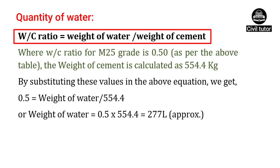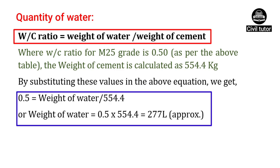The water-cement ratio is given by the formula: weight of water upon weight of cement. The water-cement ratio for M25 grade of concrete is 0.5 as per the table. The weight of cement is already calculated as 554.4 kg. Substituting, 0.5 equals weight of water upon 554.4, giving a weight of water equal to 277 liters.